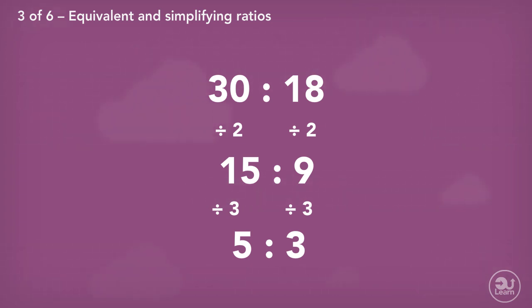We check again to see if the new values can be divided by another factor. The only number is one, so the simplification of 30 to 18 is five to three.